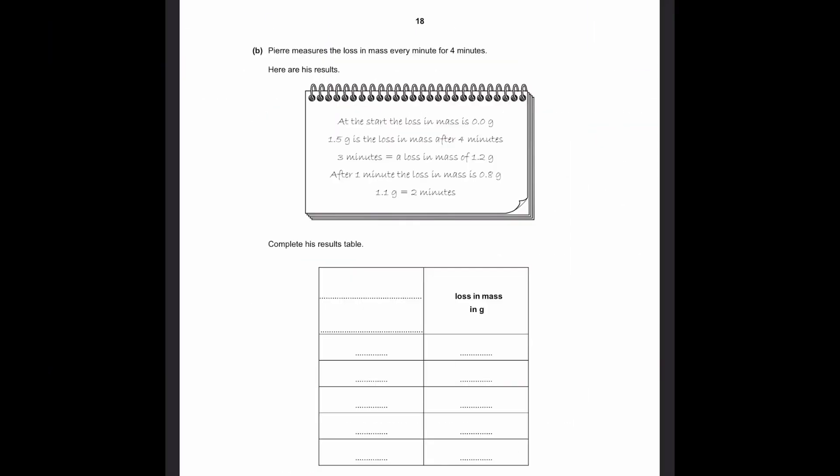Part B. Pierre measured the loss in mass every minute for 4 minutes. Here are his results. At the start, the loss in mass is 0.00 grams. After 4 minutes, 1.5 grams. After 3 minutes, 1.2 grams. After 1 minute, 0.8 grams. After 2 minutes, 1.1 grams. Complete his results table. So we only have one heading written, which is loss in mass in grams. We need the other heading. We're comparing this to time. Time is what is progressing as the reaction progresses. So time since reaction starts in minutes.